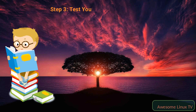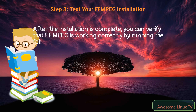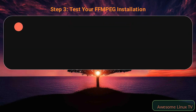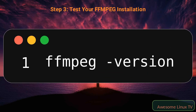Step 3: Test your FFmpeg installation. After the installation is complete, you can verify that FFmpeg is working correctly by running the following command in your terminal. This command will display the version of FFmpeg that is currently installed on your system. If you see the version number displayed on your screen, then congratulations! You have successfully installed FFmpeg on your Debian machine.